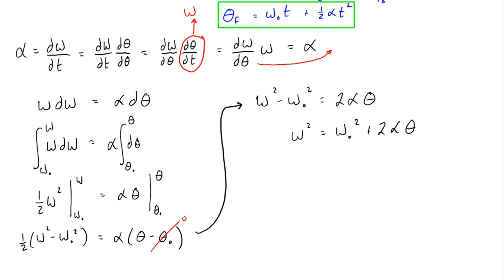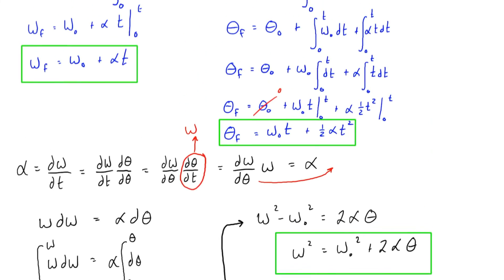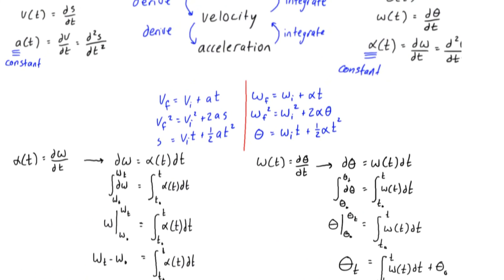And that is the last circular motion kinematic equation that you're typically given, and that is how to derive it. So in recap, we derived all three equations — equations 1, 2, and 3 — which were the original ones on the right-hand side of that red bar. Now you know how to derive them.